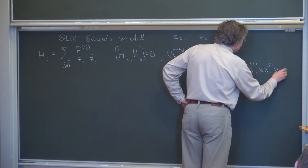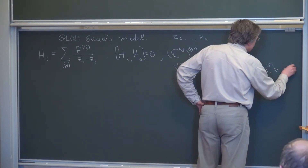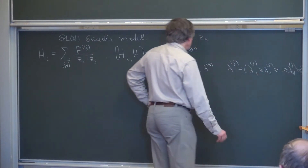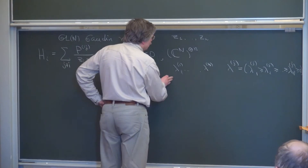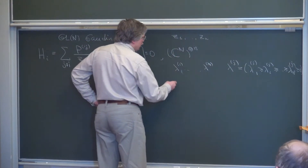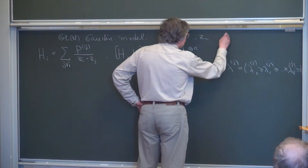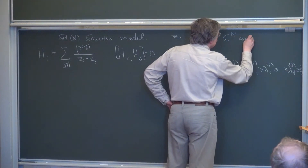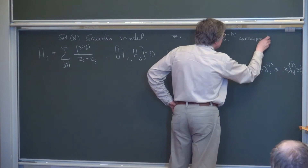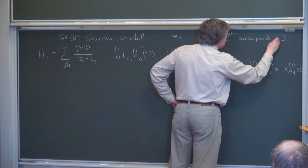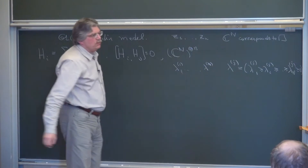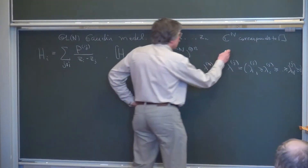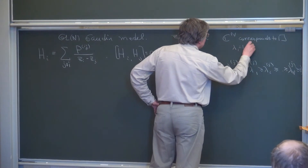A little bit more general setting which I will need is as follows. I will take a sequence of partitions, which can be considered as highest weights of the Lie algebra gl_n, or just weights parametrizing irreducible representations of the group GL_n. This is a sequence of non-negative integers. Instead of the tensor product of vector representations — the vector representation corresponds to a one-box partition in the Young diagram notation, meaning lambda_1 equals 1 and lambda_2 equals 0 and so on.